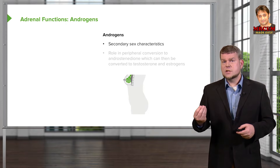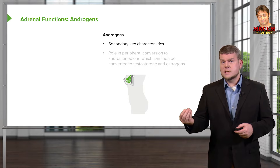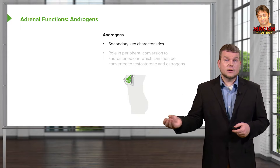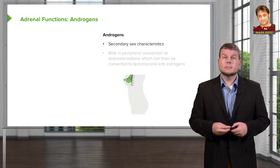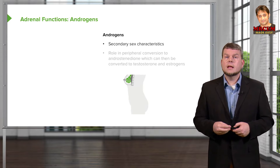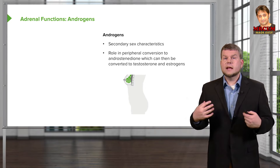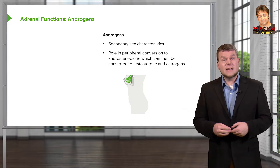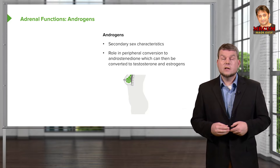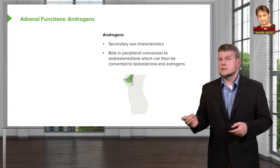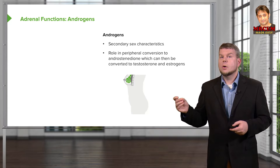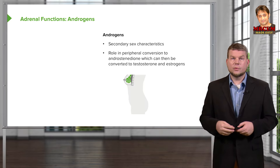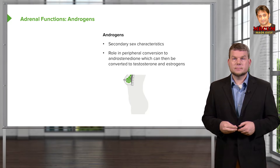Androgens are important in secondary sex characteristics, and androstenedione can be converted to either testosterone or estrogen by peripheral tissues.